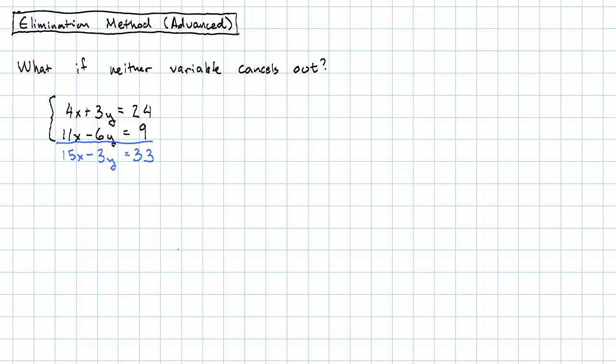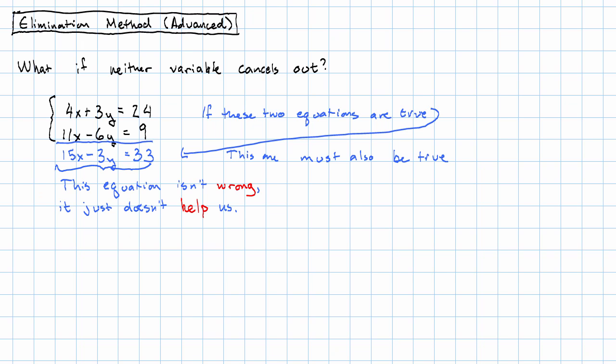Now we did that correctly in the sense that if these two equations are true, this one must be true. So in that sense, there's nothing wrong with this equation. It just doesn't do us any good. Why doesn't it help us? Because it still has two variables in it.